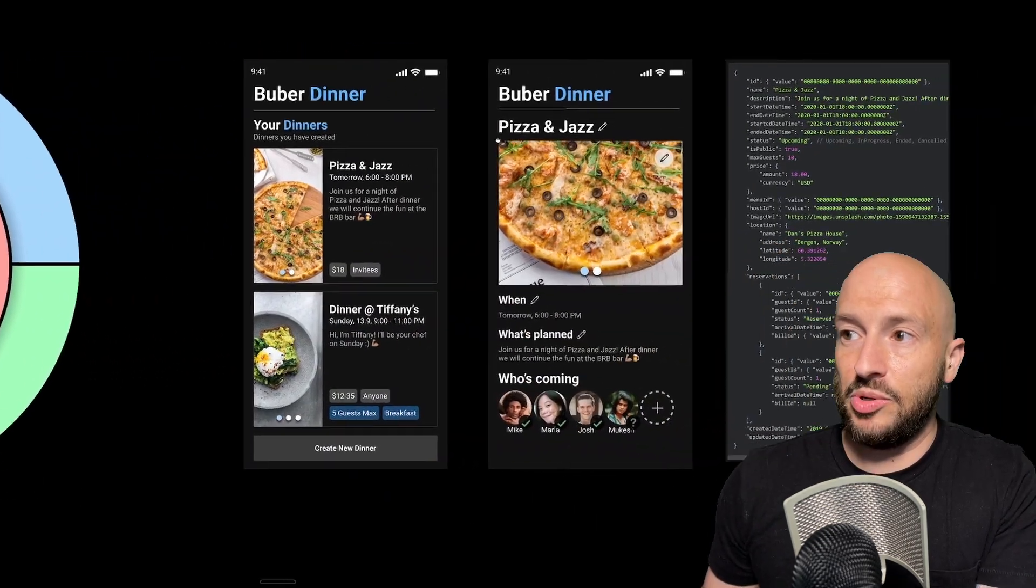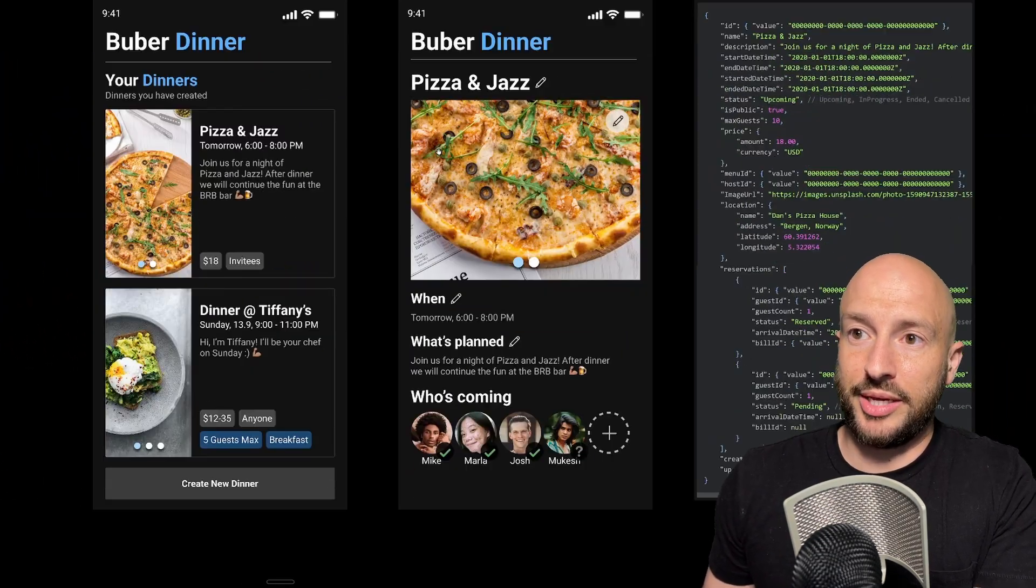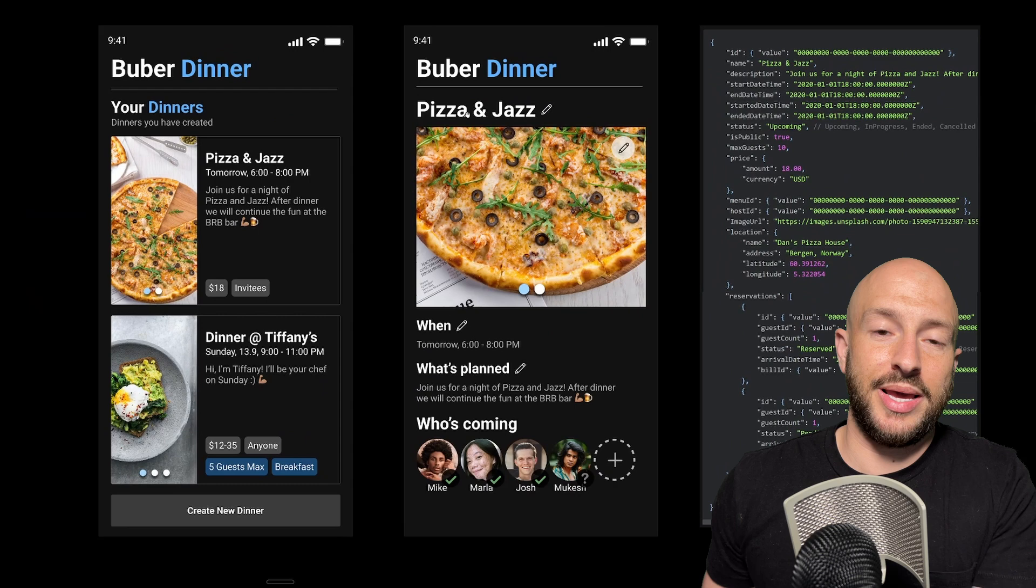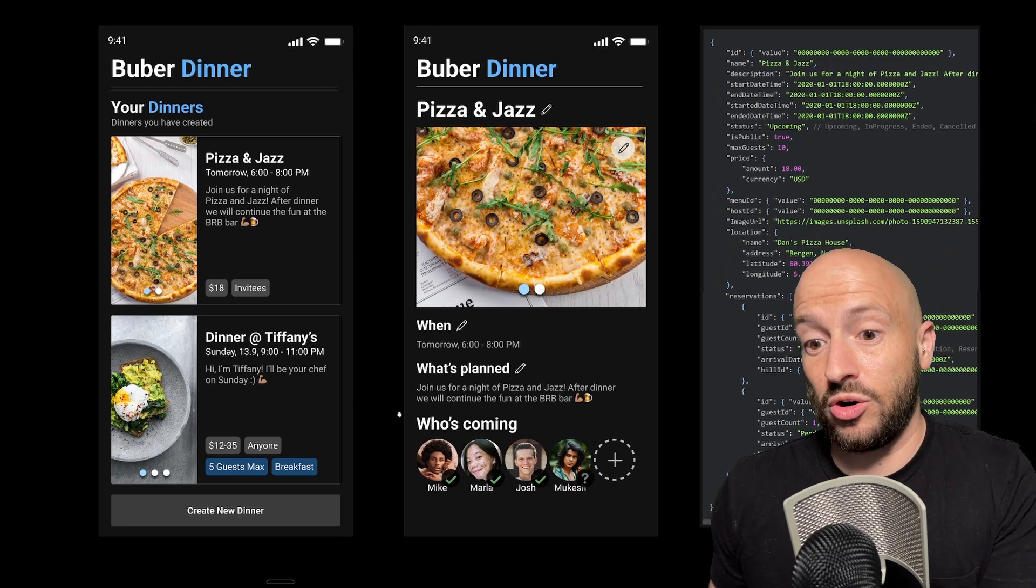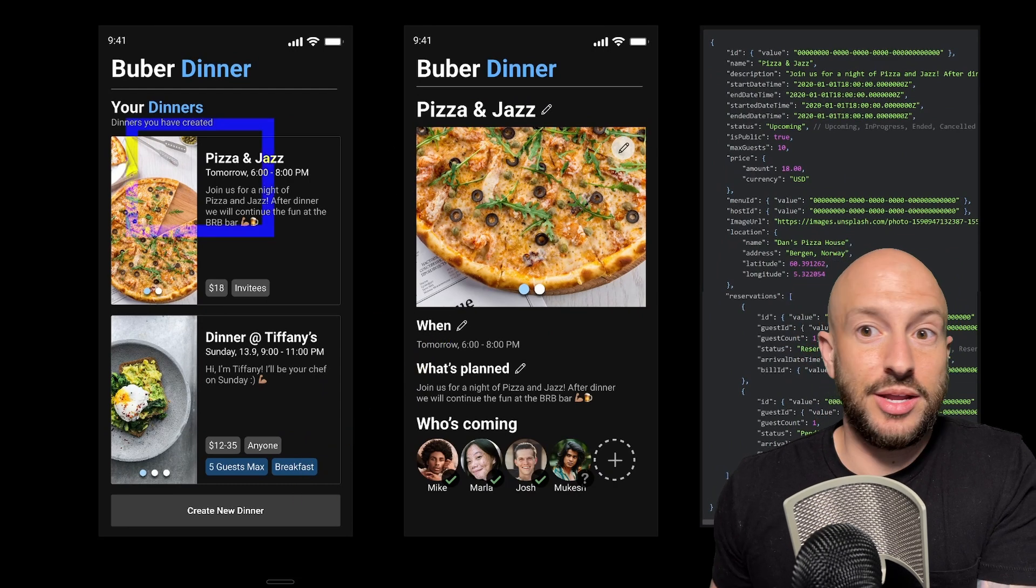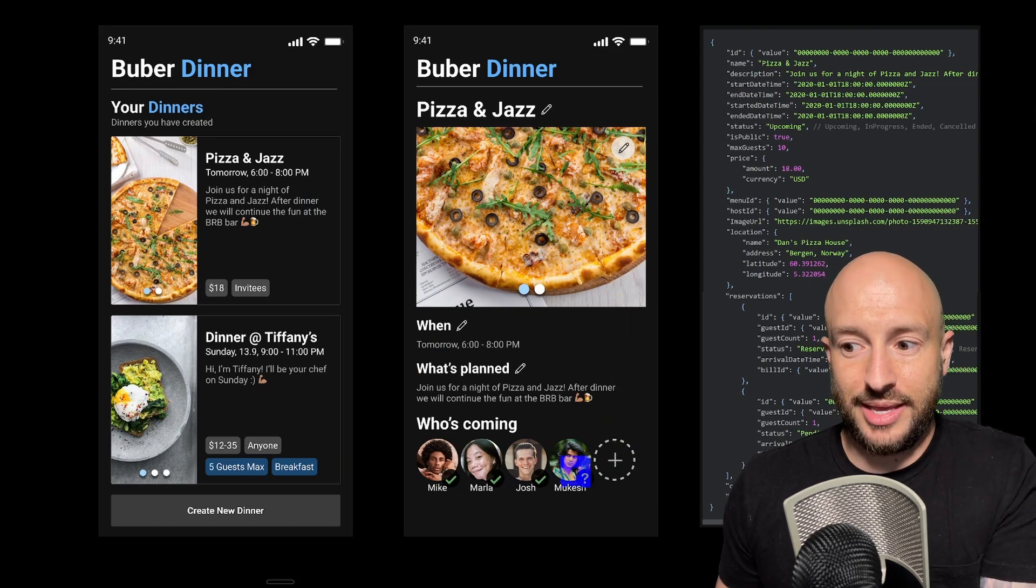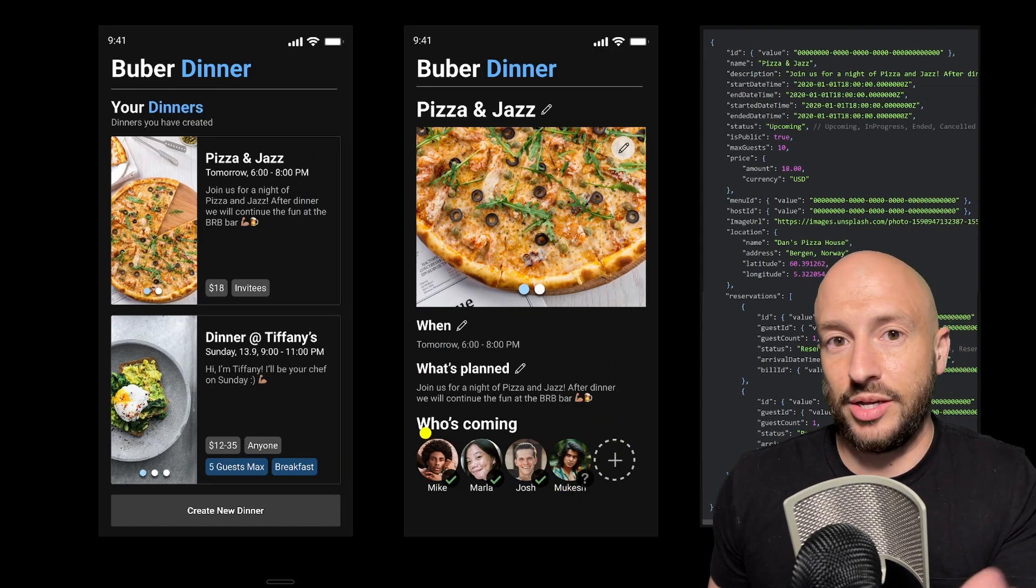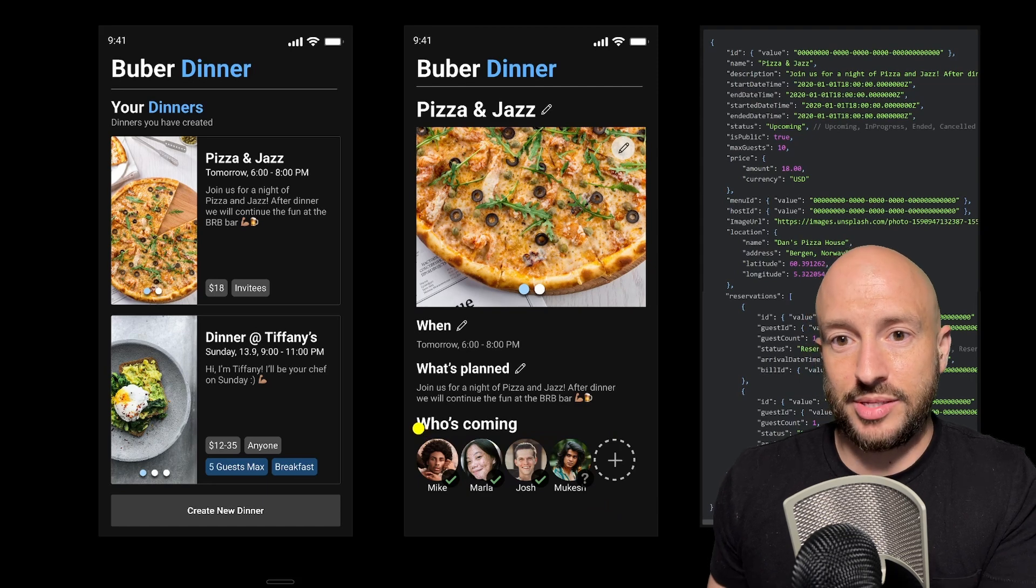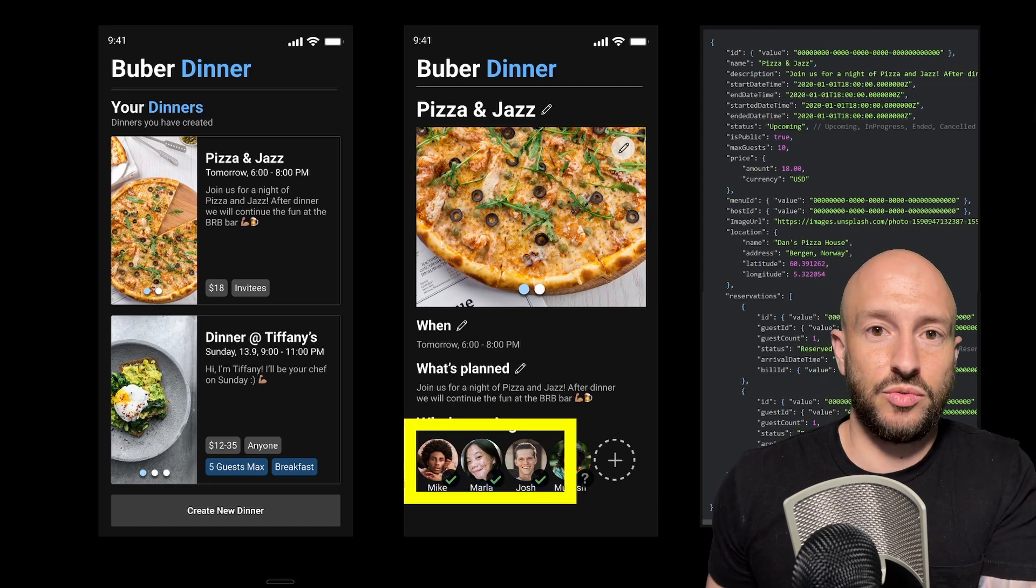Throughout the examples today, we're going to use this application as reference. This is basically a dinner hosting platform. So as a host, you can create a new dinner, then you can invite people to come to this dinner and they can attend if they want. And guests can also just scroll the list of dinners and explore what's available and reserve a spot.